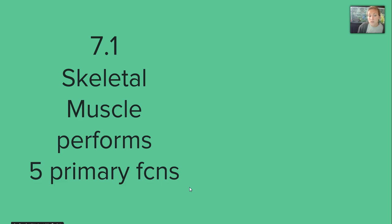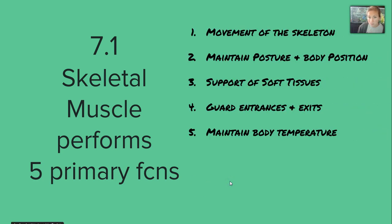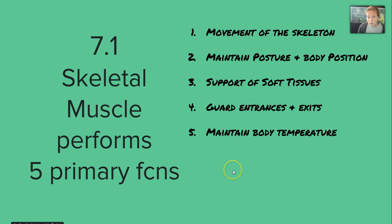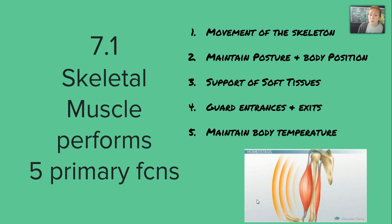We're going to focus on skeletal muscle since it forms the majority of our muscles. There are five primary functions: movement of the skeleton, maintenance of posture and body position — like being able to lay down and stay laying down, or stand up and stay standing up — support of soft tissues by carrying the weight of organs and protecting them, guarding entrances and exits by encircling areas of the digestive and urinary tracts, and maintaining body temperature through muscle contraction, which plays a role in homeostasis at 98.6 degrees.